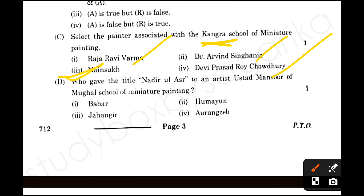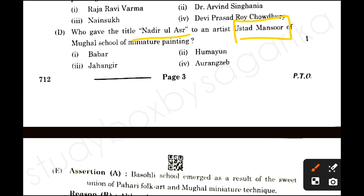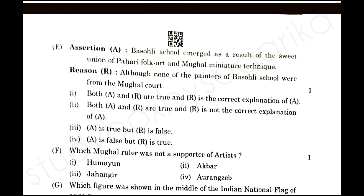Next question D: Who gave the title 'Nadir ul Asatun' to artist Ustad Mansoor? If you don't know about this, you should know that Ustad Mansoor's painting — that is 'Falcon on Bird Rest' — was made at the time of Jahangir. The answer for D will be option 3.